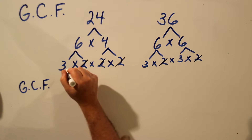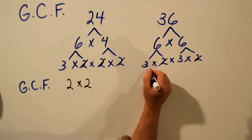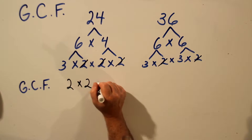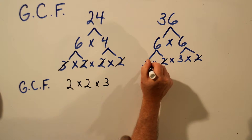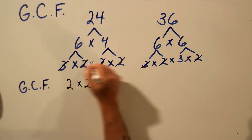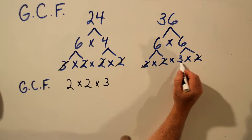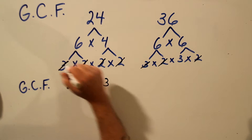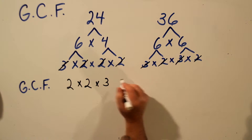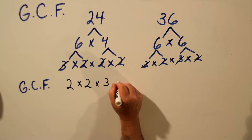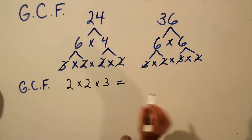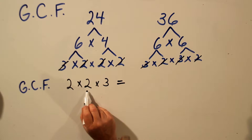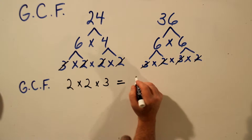Now we'll do our 3s. In this list we have a 3, and in this list we have a 3, so we'll use 3. We have one more 3 here but no matching 3s, so we don't use that. So now we just multiply. The greatest common factor is 2 times 2, which is 4, times 3, which is 12.